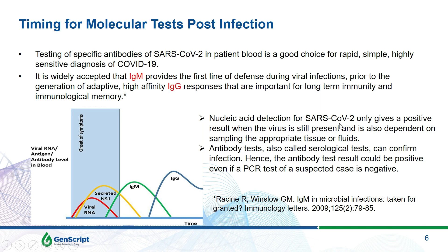Nucleic acid detection for SARS-CoV-2 only gives a positive result when the virus is still present, and is also dependent on sampling the appropriate tissues or fluids. Since this is a deep lung infection, it is important to swab way back in the throat to ensure that shedding of the virus has come from the deep lung. If sampling is not done properly, you can easily get false negative results with nucleic acid detection and qPCR. Antibody tests can confirm the infection and serve as a complementary test — giving a positive result even if a PCR test of a suspected case is negative.